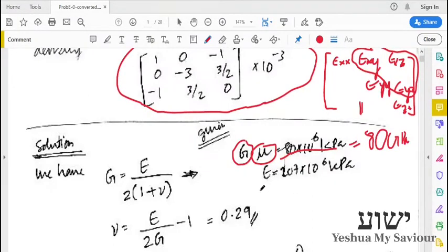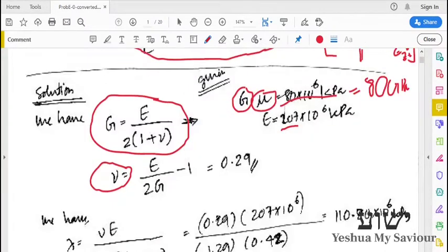And the modulus of elasticity or Young's modulus, that is 207 GPa. We have a relationship between Young's modulus and modulus of rigidity. From this, we will get μ, the Poisson's ratio, which is 0.29.